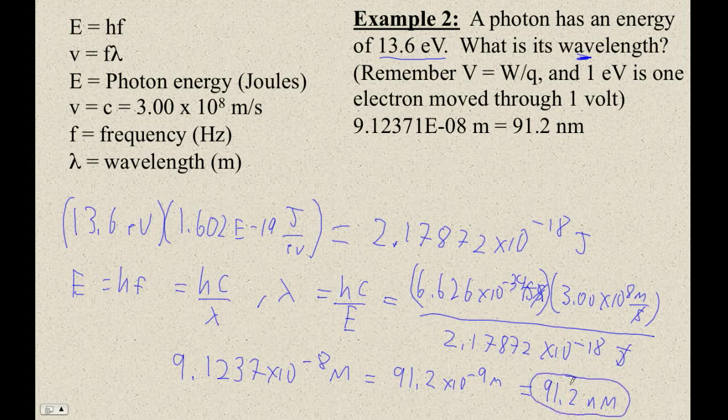Which equals 91.2 nanometers. Wavelengths like this, wavelengths of light or whatever, almost always are in nanometers. Energies are in electron volts. Remember that electron volts times 1.602 times 10 to the minus 19th equals joules, and joules divided by 1.602 times 10 to the minus 19th equals electron volts. So that's a handy thing. Remember that 1 times 10 to the minus 9th meters is a nanometer. So you should be good.